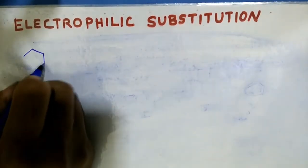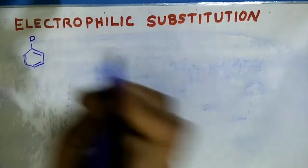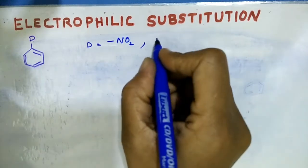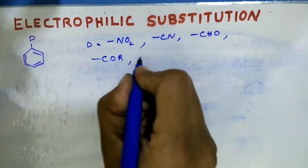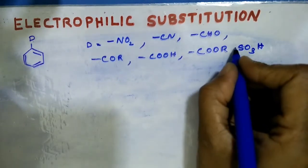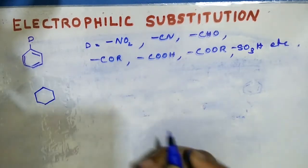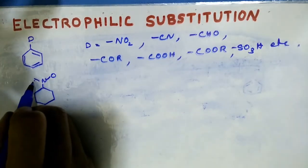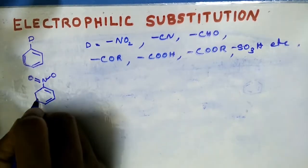Now suppose the monosubstituted benzene has a deactivating group — I'm writing D here. The groups may be nitro group, CN group, CHO group, COR group, COOH group, COOR group, SO3H group, etc. If these groups are present, what will happen? We can start from a nitro compound. The nitro compound has the structure N with a double bond to O — this is the nitro group on benzene.